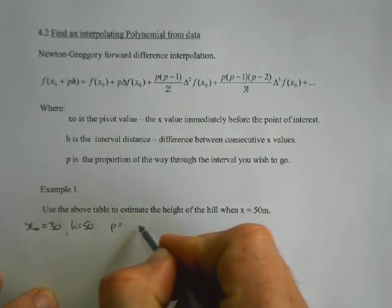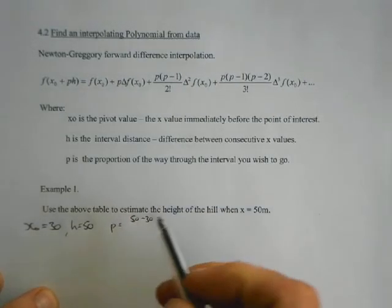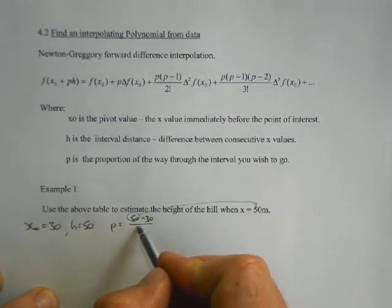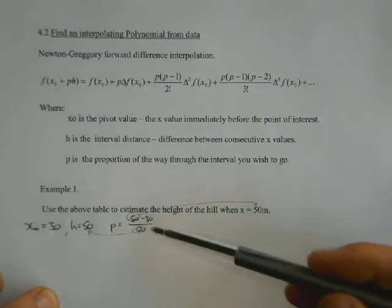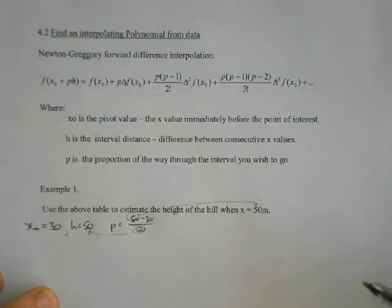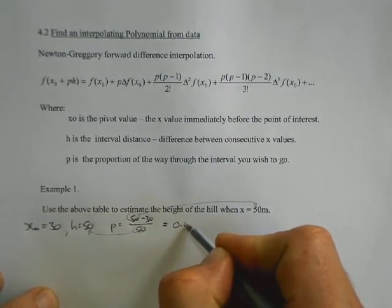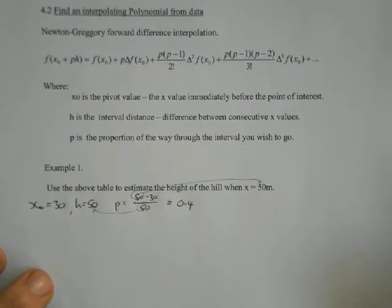And p is the proportion of the way through the interval we're working on. So we want to go from 50. We start at 30 and want to get up to 50. So this 50 here is that 50. And the interval width is 50 as well, which is that one. So the fact that those two numbers are both the same, in this case it's just a fluke, which is 20 over 50 is 0.4. So that gives us the values for x0, h and p.